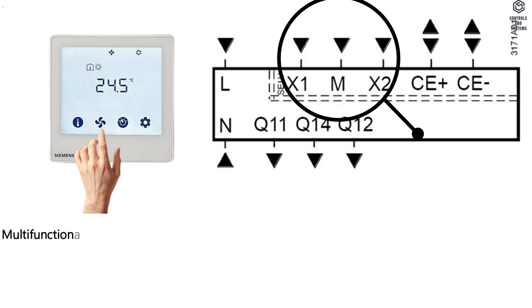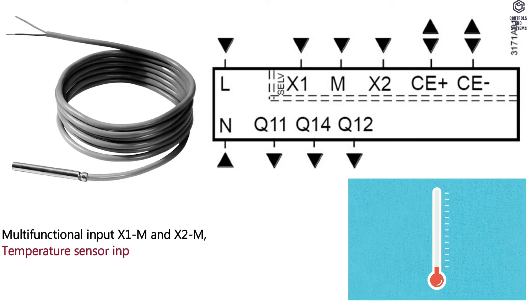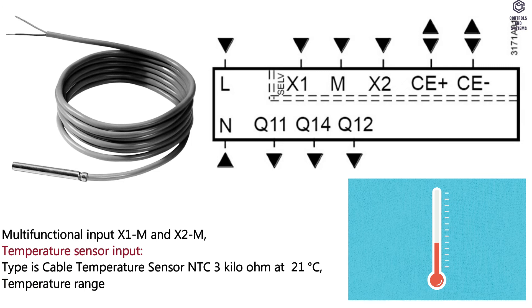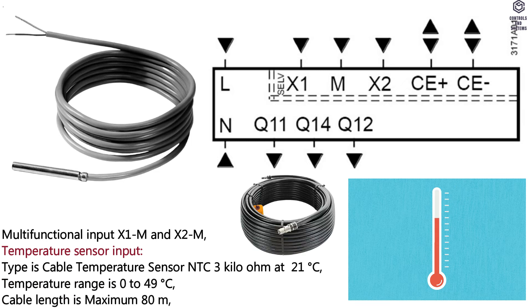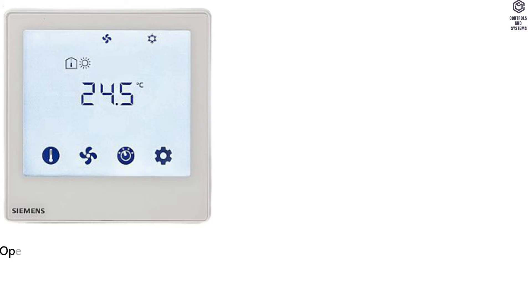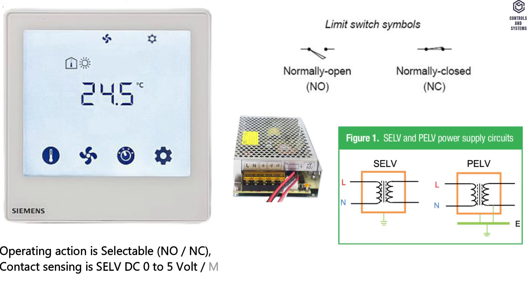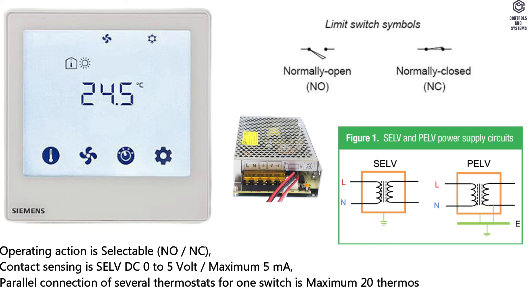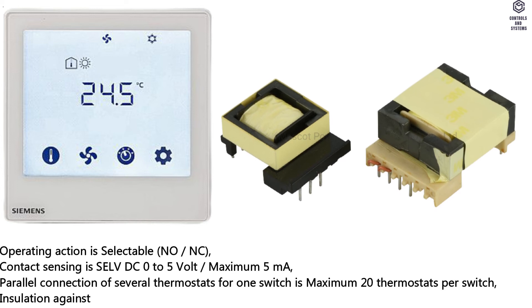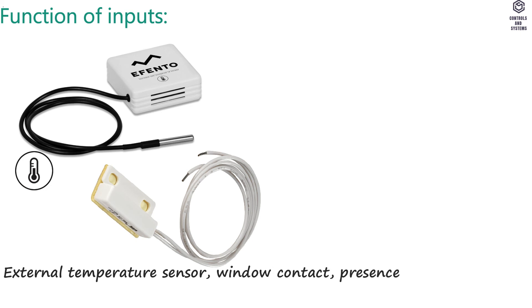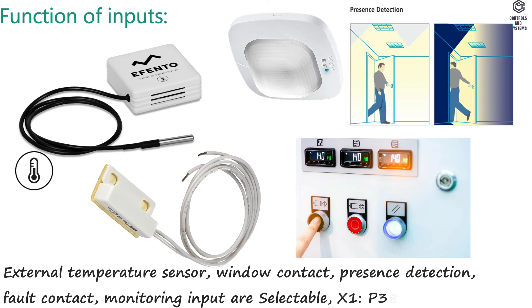Inputs: multifunctional inputs X1M and X2M. Temperature sensor input type: cable temperature sensor TC 3 kΩ at 21°C, temperature range 0 to 49°C, cable length maximum 80 m. Digital input: operating action selectable NO/NC; contact sensing SELV DC 0 to 5V, maximum 5 mA; parallel connection maximum 20 thermostats per switch; insulation against mains voltage SELV — 4 kV reinforced insulation. Function of inputs: external temperature sensor, window contact, presence detection, fault contact, monitoring input — all selectable.